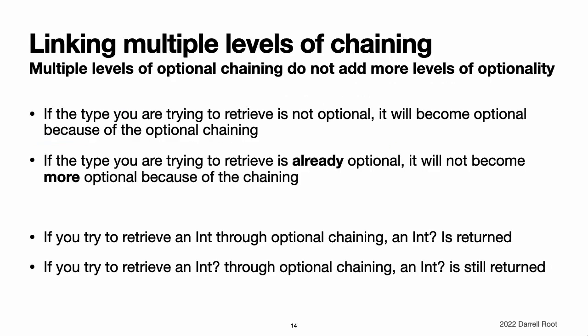Linking multiple levels of chaining. You can link together multiple levels of optional chaining to drill down into properties, methods, and subscripts deeper within a model. However, multiple levels of optional chaining do not add more levels of optionality to the return value. If the type you are trying to retrieve is not optional, it will become optional because of the optional chaining. If the type you are trying to retrieve is already optional, it will not become more optional because of the chaining. Therefore, if you try to retrieve an int value through optional chaining, an optional int is always returned, no matter how many levels of chaining are used. Similarly, if you try to retrieve an optional int value through optional chaining, an optional int is always returned, no matter how many levels of chaining are used.